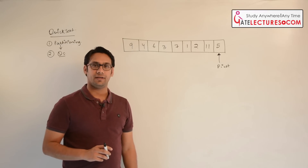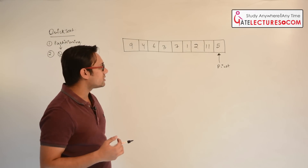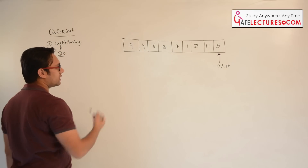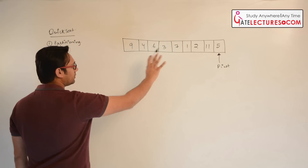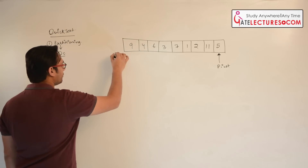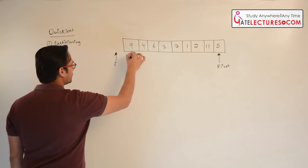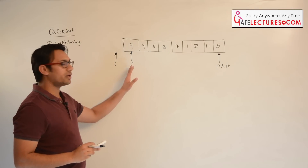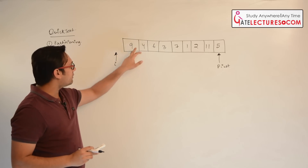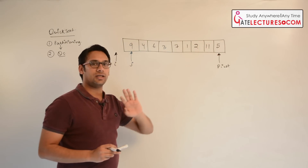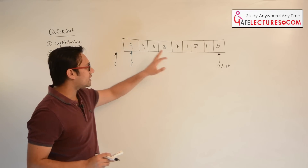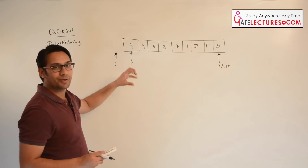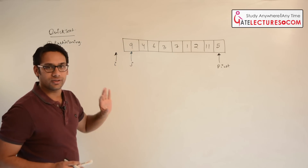Assume this last element 5 is the pivot element. We will take two pointers, or two variables: one will be i and the second one will be j. Every time we are going to increment j, and if the element pointed by j is greater than 5 then nothing will be done. But if the element is less than 5 then we are going to increment i and then swap the values pointed by i and j.